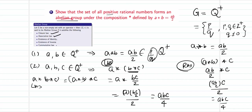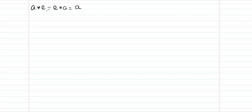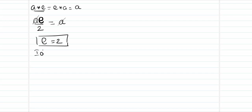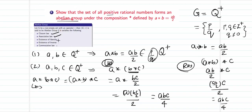For the identity element: I need to find e such that a * e = a. By the binary operation, a * e = ae/2 = a, which gives e = 2. The element 2 belongs to Q⁺ since it can be written as 2/1, which is of the format p/q. Hence the identity element exists and equals 2.